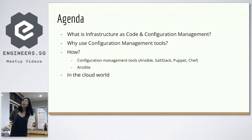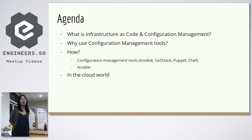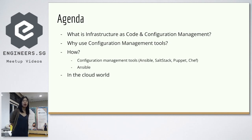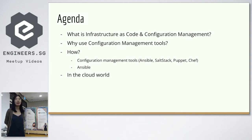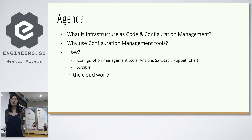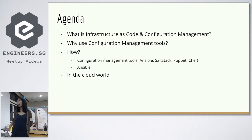Here's the agenda for today. We'll cover what is infrastructure as code and what is configuration management, followed by why and how. For the how part, we'll compare popular tools like Ansible, SaltStack, Puppet, and Chef. Then we'll dive into Ansible with examples to show you how the tools can be used, and we'll also see some Ansible code. Lastly, in the cloud world there are many managed services, so we'll cover where configuration management tools stand.